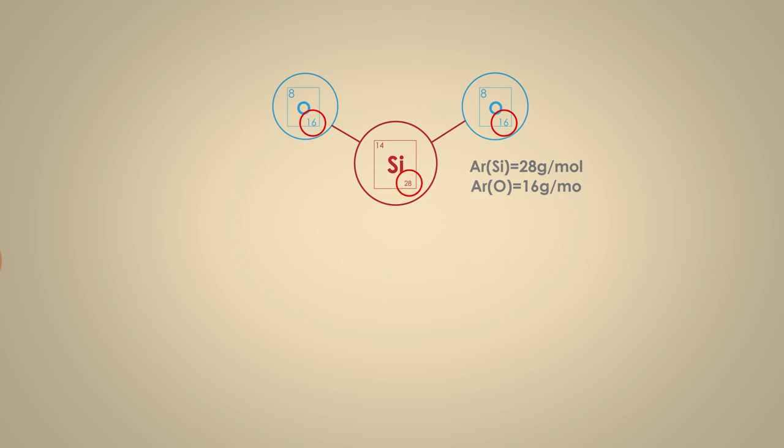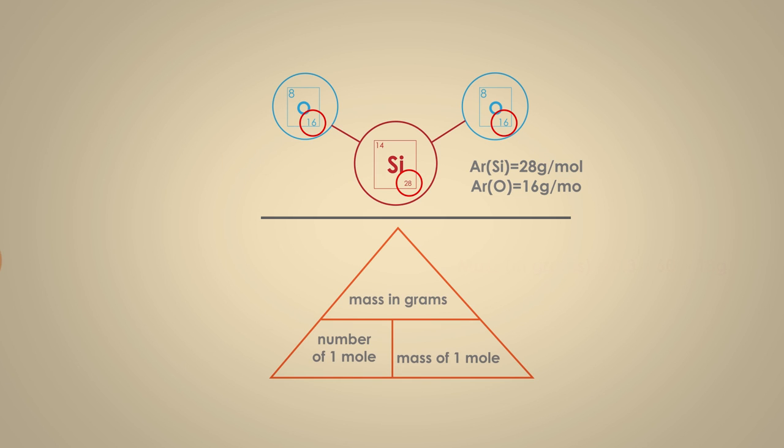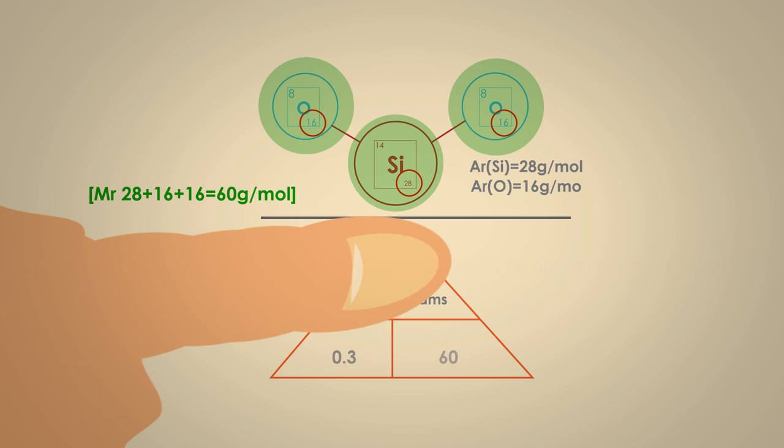Ready for the answer? The MR of silicon dioxide is 28 plus 16 plus 16, which is 60 grams per mole. You will need 18 grams of silicon dioxide to get 0.3 moles.